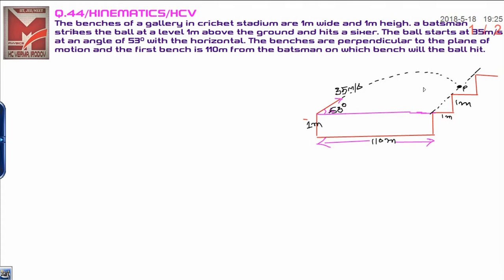It will follow the projectile motion. 110 meters from the batsman, this distance is given and 1 meter high above the ground, batsman hit the six. In order to calculate it, first you need to calculate the equation of trajectory.